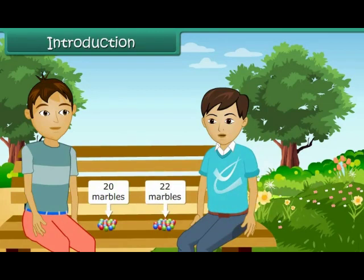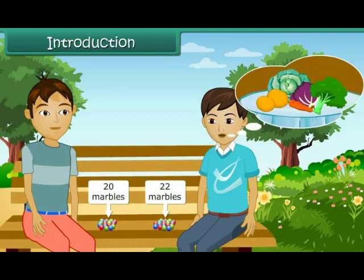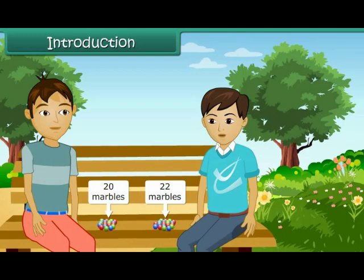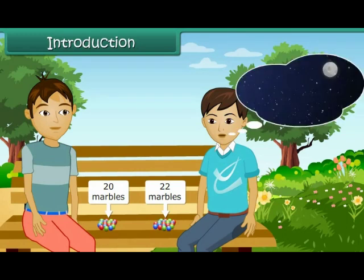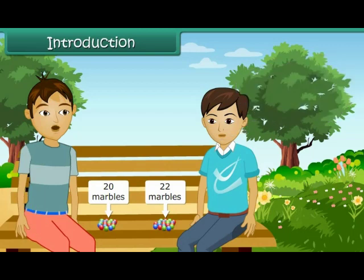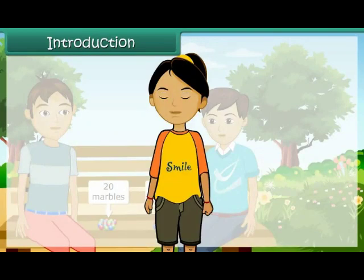We can count the things around us like vegetables, cars, etc. Certain things cannot be counted like stars in the sky, hair on our head, etc. Mathematically, you are talking about whole numbers. Let us learn about whole numbers in this lesson.